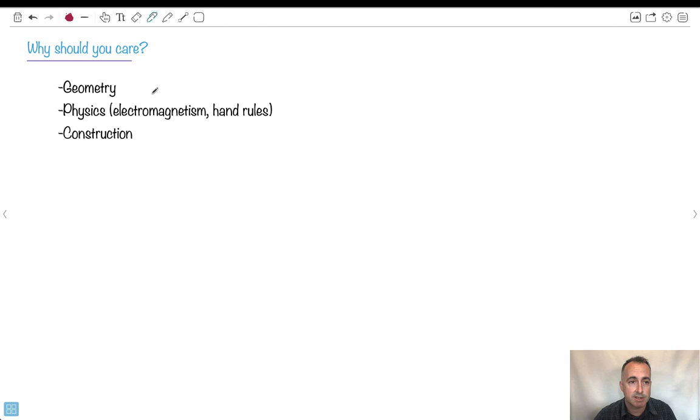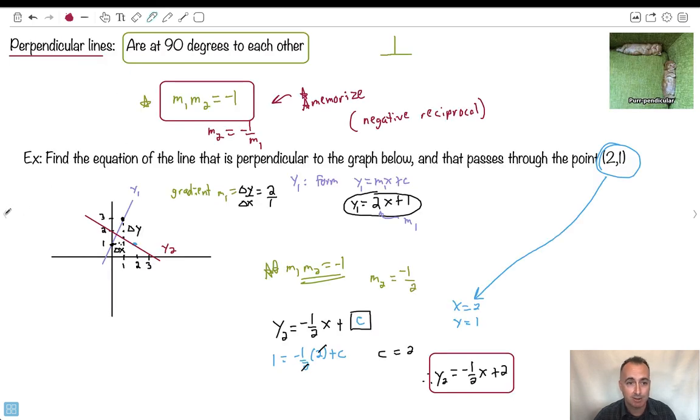So, when do we actually use this stuff? Well, lots in geometry, when we think about parallel versus perpendicular. In physics, we have all these things in electromagnetism. We use these hand rules and these weird things. In construction, it's important to get things parallel or perpendicular. Those are just some of the examples I could think of. But at least mathematically, here's how we can do it.